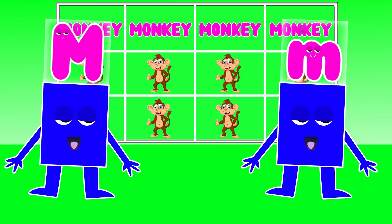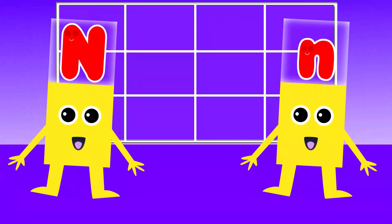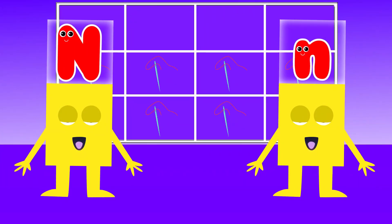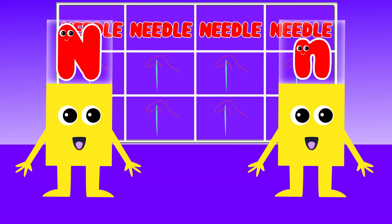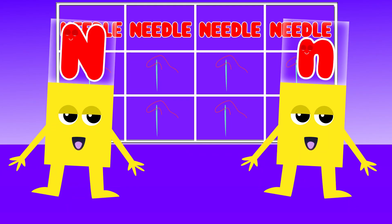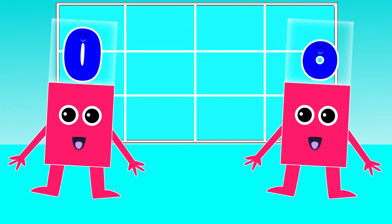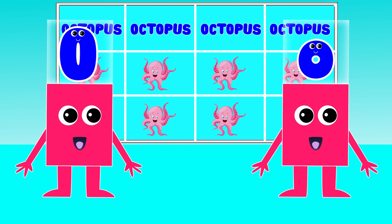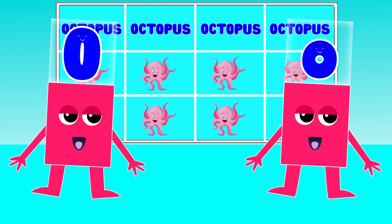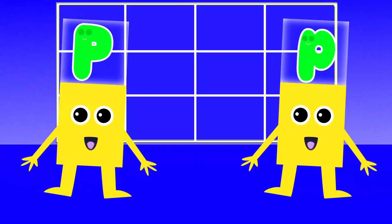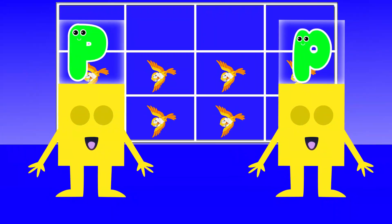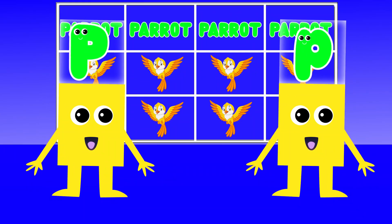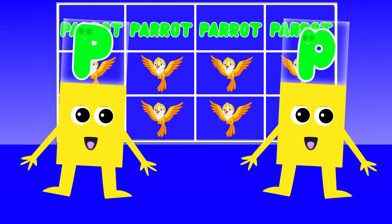M is for Monkey. M, M. Monkey. N is for Needle. N, N. Needle. O is for Octopus. O, O. Octopus. P is for Parrot. P, P. Parrot.